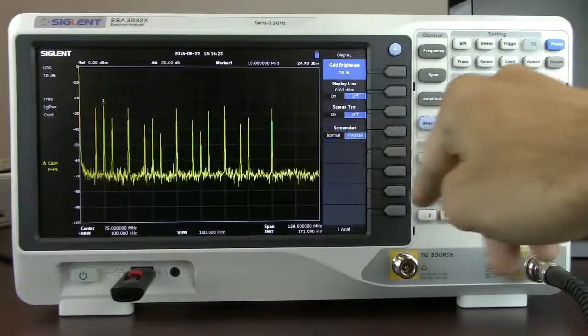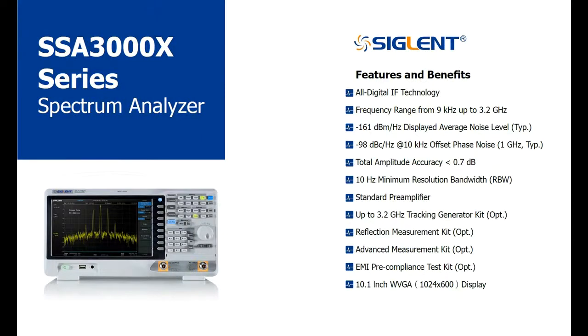The next option I'd like to introduce is the EMI toolkit for the SSA 3000X. The EMI toolkit is helpful if you're going to be performing any troubleshooting or pre-compliance measurements on your product prior to taking it in for full compliance testing. The main idea here is that you're going to get data that allows you to understand whether you're going to pass compliance testing on the first pass, or if you maybe need to go back and perform a little bit of tweaking to your design.